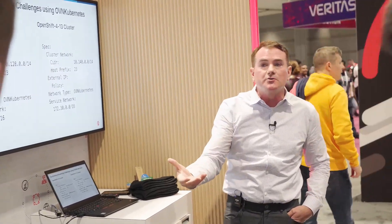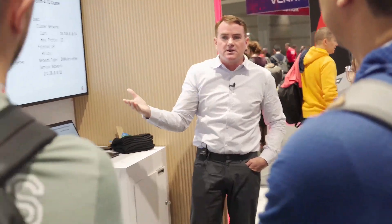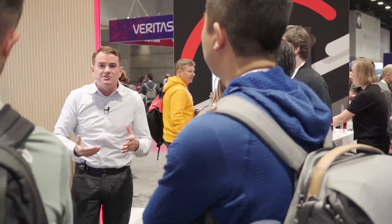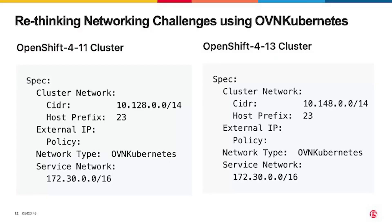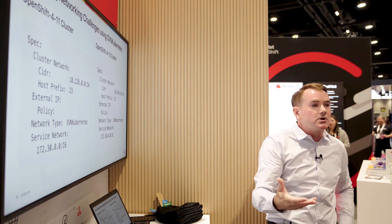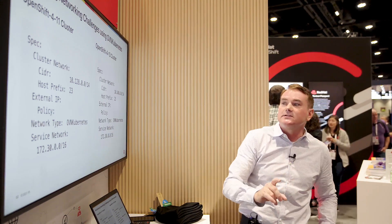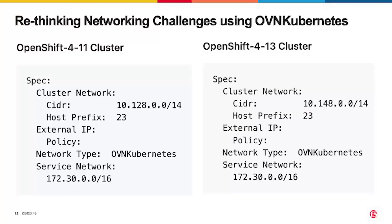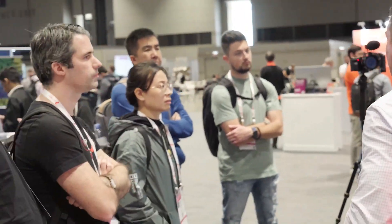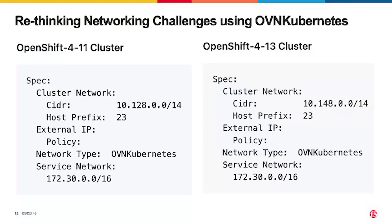The routing uses cluster IP — not node port. Big IP acts as a router sending traffic to the node, which then forwards it to the pod across the OVN Kubernetes Geneve encapsulated network. In the demo, two clusters are shown: a 4.13 and a 4.11 cluster. Their pod networks are different, which is expected and required since Big IP is a network device sending traffic based on pod network.